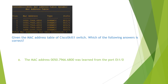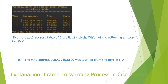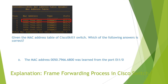The last answer states that a specific MAC address was learned from port E1/0, and we find this entry — they match, so this answer is correct. You can find the detailed explanation in the video 'Frame Forwarding Process in Cisco Switch.'